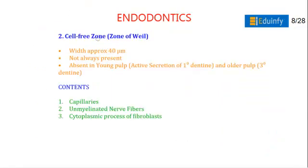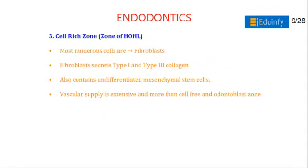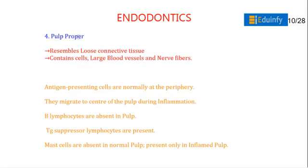The cell-free zone (zone of Weil) has a width of 40 micrometers. It is not always present — it is absent in young pulp. It contains capillaries, unmyelinated nerve fibers, and cytoplasmic processes of fibroblasts. The cell-rich zone contains the most numerous cells, which are fibroblasts. Fibroblasts produce type 1 and type 3 collagen and also contain undifferentiated mesenchymal stem cells. Vascular supply is extensive.